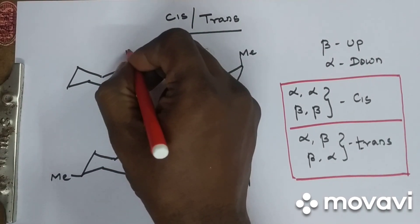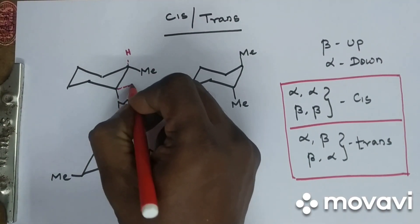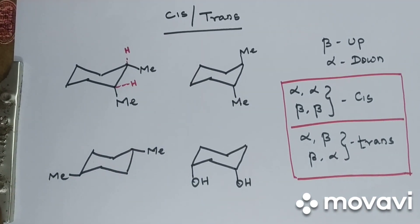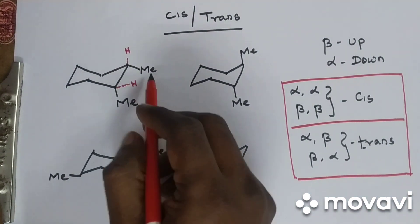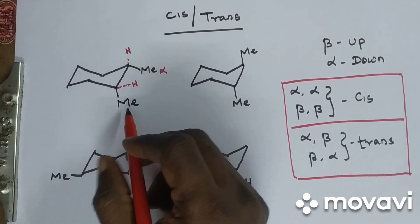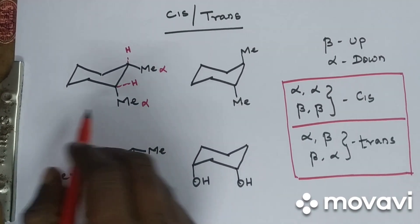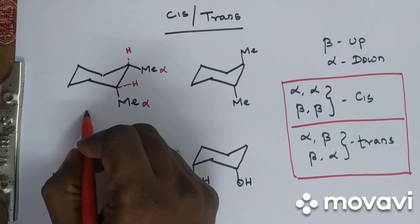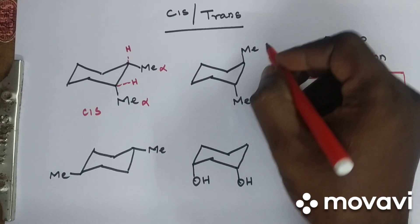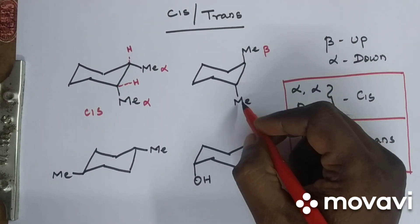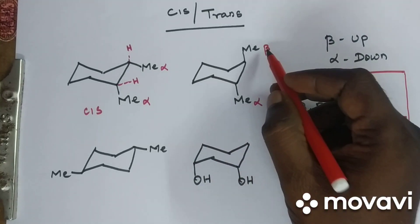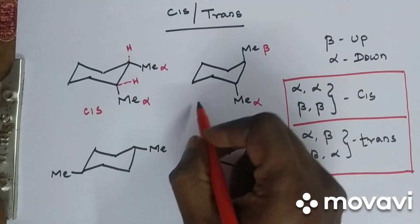Here are some examples with 1,2-dimethylcyclohexane. If you have a doubt, draw the hydrogen. Look at these two methyl groups: this methyl is down — that means alpha — and this methyl is also down — also alpha. So alpha-alpha means cis. In the next example, this methyl is above — beta — and this methyl is down — alpha. Beta-alpha means trans.